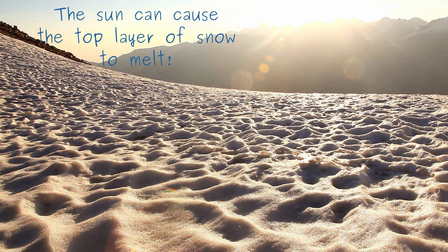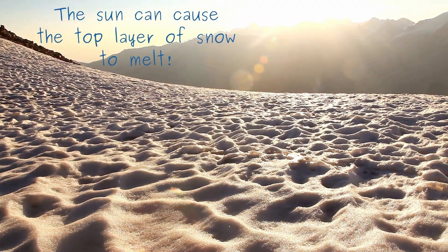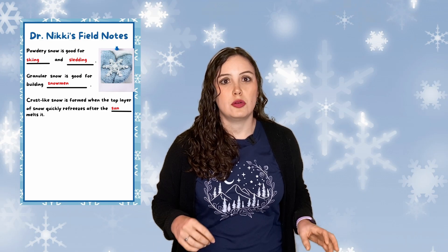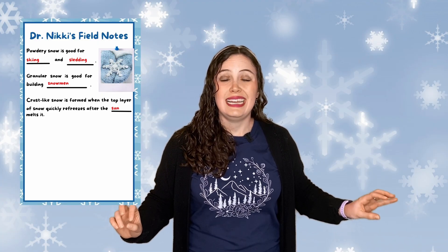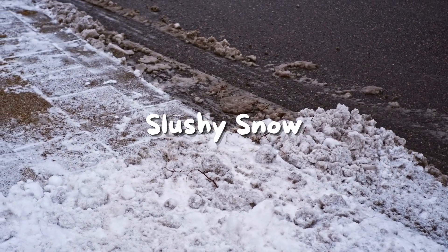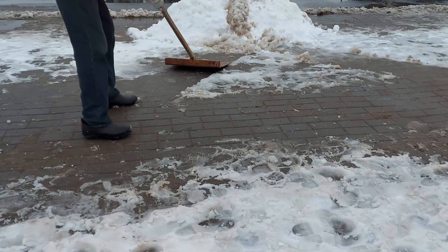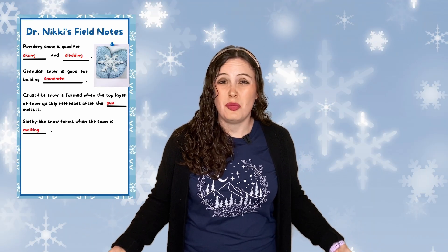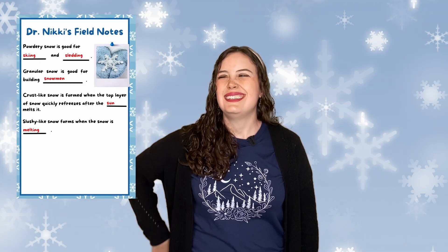These snow types are more about what happens once the snowflakes reach the ground. One type is crust-like snow — that happens when the sun comes out and the very top layer of snow on the ground starts to melt just a little bit, then it gets really cold and freezes quickly, forming a layer of ice on top of the snow. The final type is slushy snow, which forms when the snow starts to melt but hasn't quite melted — so it's really wet but also still kind of snowy. It just gets you really wet and you can't form it into snowballs. So that's not super fun snow.